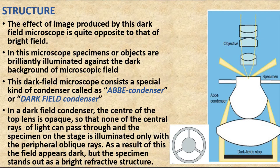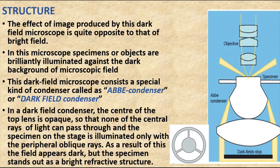Coming to the structure of the dark field microscope, the effect of image produced is quite opposite to that of the bright field microscope. In the bright field microscope, objects appear darker and the background is brighter. In the dark field microscope, objects appear brighter and the background is darker.